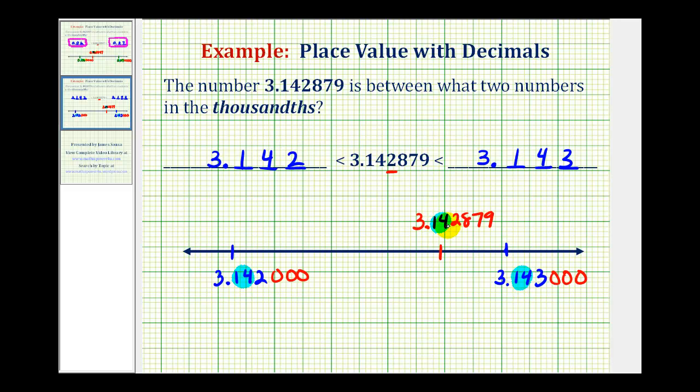But if we compare the thousandths place value, this number has a 2, and so does the smaller number. But notice how the larger number has a 3, which verifies this number is larger than the given number.